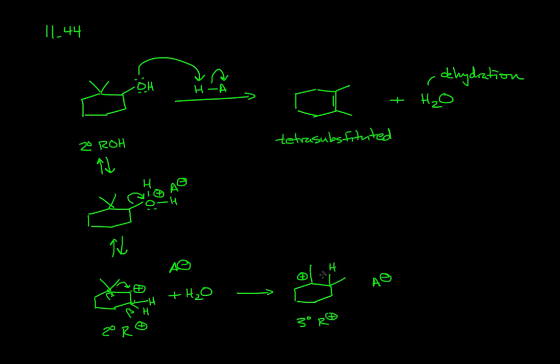And then if we look at how this structure relates to the product, all we have to do is an elimination. So the final step is an E1 elimination. We're going to have a lone pair of electrons from the counterion extract the beta hydrogen. And that's going to get us our tetrasubstituted alkene.